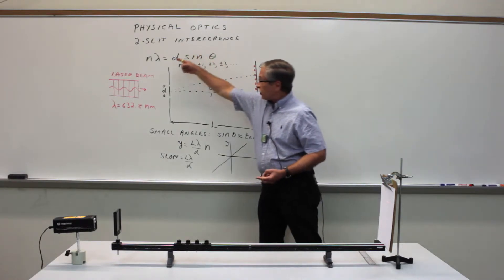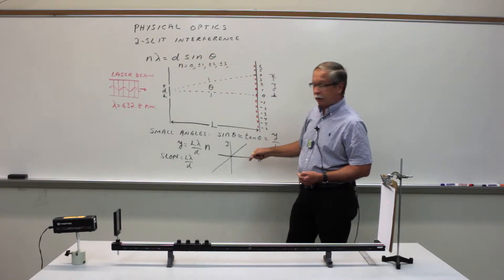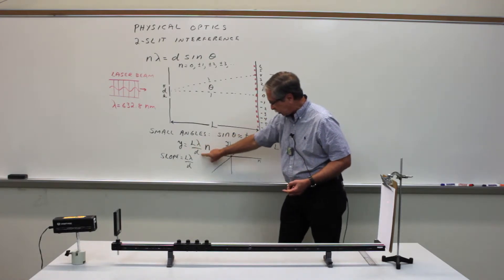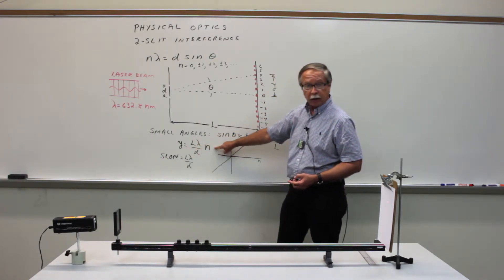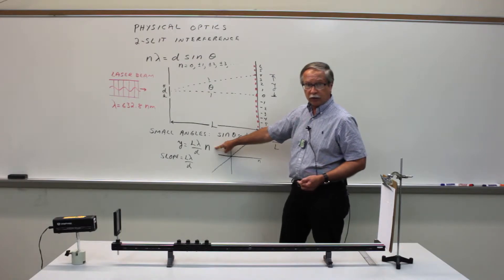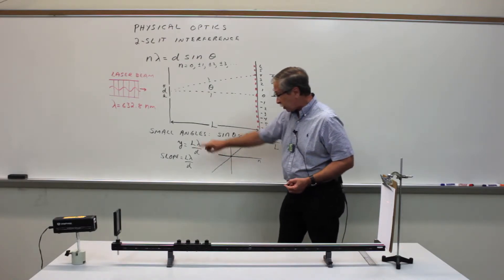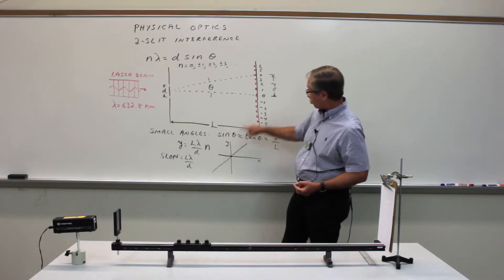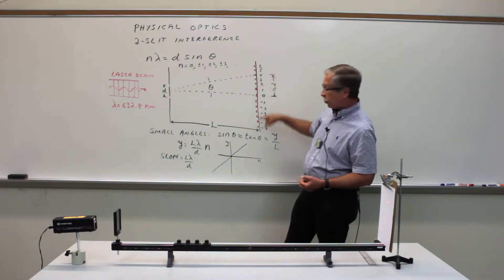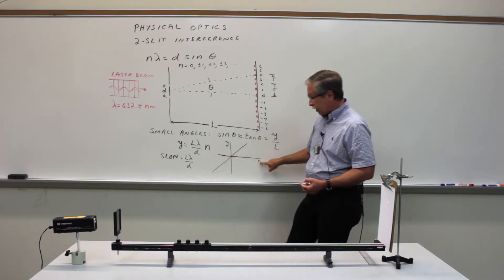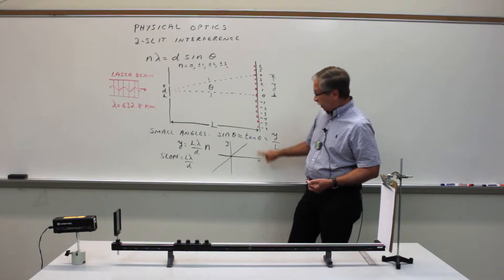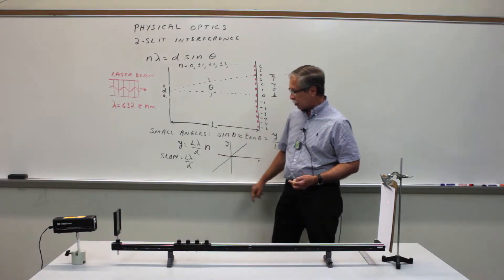So rearranging the equation for constructive interference, we have Y equals L lambda over d times n, and you can determine the separation between the slits by making a plot of the position Y, the location of the bright spot, as a function of n, the order of interference, and the slope of that plot is just L lambda over d.